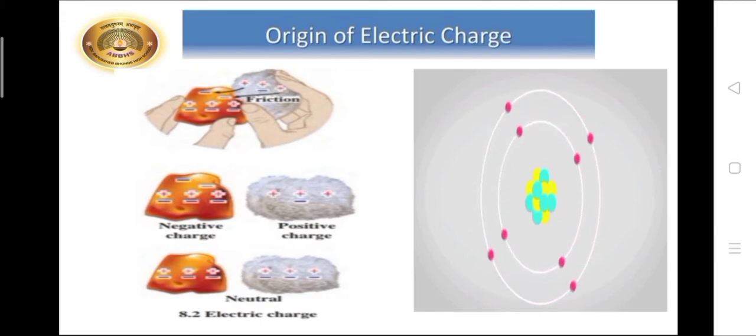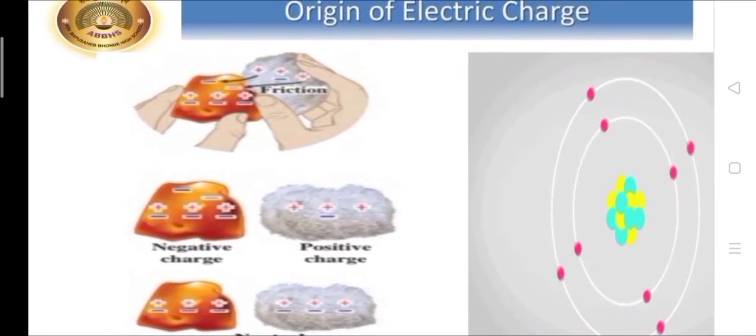As you can see here in the picture, before rubbing, the two objects are neutral and after rubbing due to friction, one object becomes negatively charged and other object becomes positively charged.